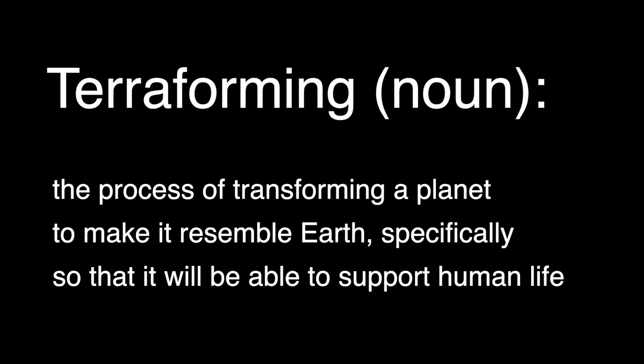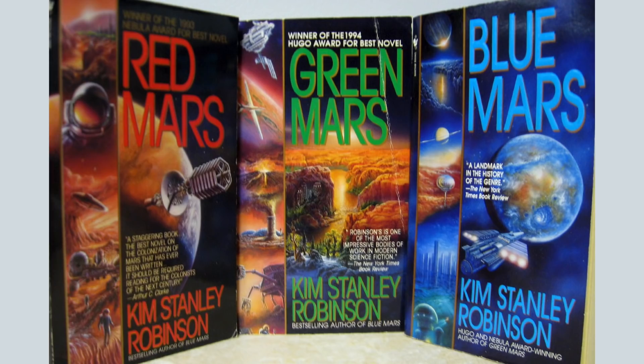The topic for today's video is terraforming, which is defined as the process of transforming a planet to make it resemble Earth, specifically so that it will be able to support human life. It doesn't have to be a planet — you could terraform a moon or an asteroid — but most people who are interested in terraforming focus on Mars, so that's what I'll be focusing on. Terraforming has never been attempted except in science fiction; perhaps the most notable example is Kim Stanley Robinson's Red Mars trilogy, which I definitely recommend.